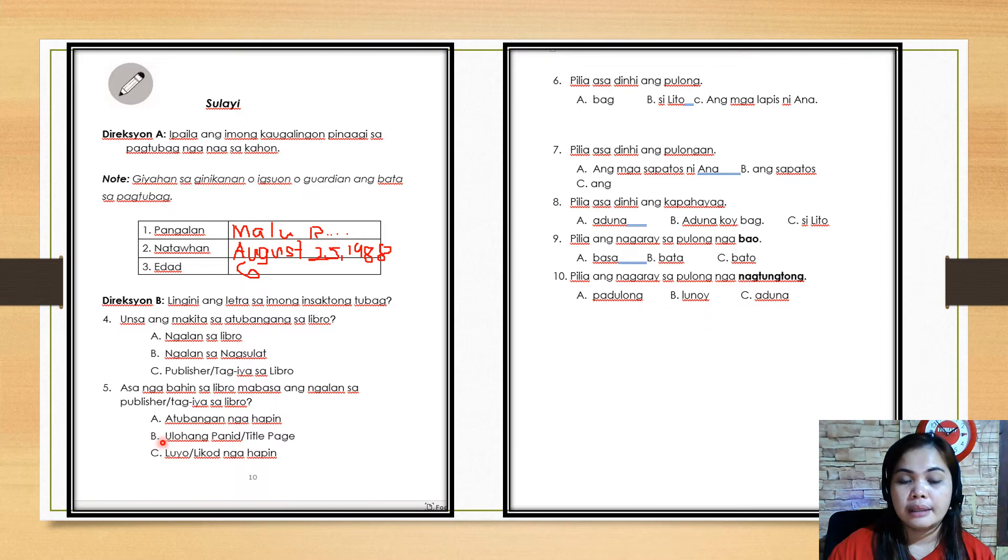Letter A: in front of the page or the front page. Letter B: the title page. Letter C: at the back of the page or the back of the book. So choose your answer A, B, or C and then encircle it.